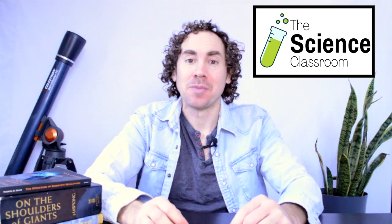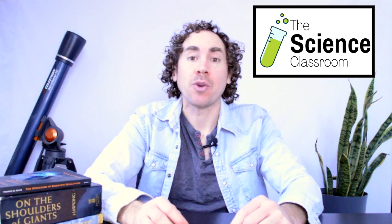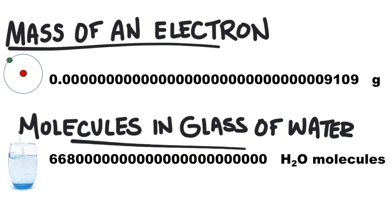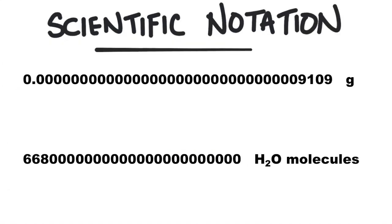Hi, I'm Josh and this is The Science Classroom. In this video, we're going to talk about how to write in scientific notation. Chemistry often deals with really small or really large numbers. These sorts of numbers are hard to write and they have a lot of zeros. There has to be a better way and, well, there is. It's called scientific notation.